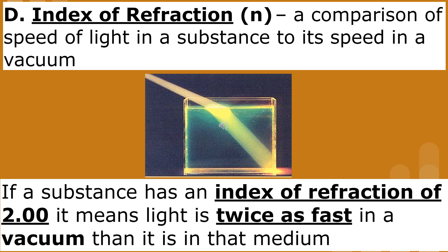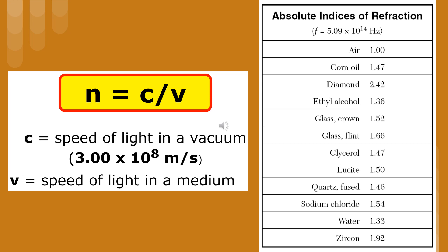This means that light travels 1.33 times faster in a vacuum than it does in water. The index of refraction is equal to the speed of light in a vacuum, 3 times 10 to the 8th meters per second, divided by the velocity of light in the medium.